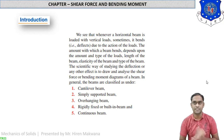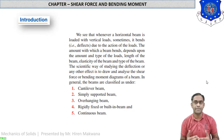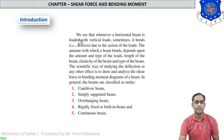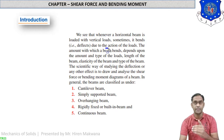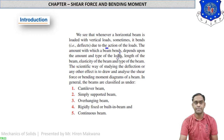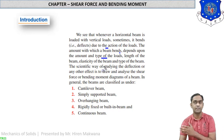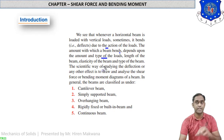First, we will discuss some introductory topics, then move towards a numerical which will show us how the diagrams are drawn and how loads act on the beam. Whenever a horizontal beam is loaded with vertical loads, it may bend due to those loads. The amount of bending depends on the type and amount of load, the length of the beam, the elasticity of the beam, and the modulus of elasticity of the beam material.